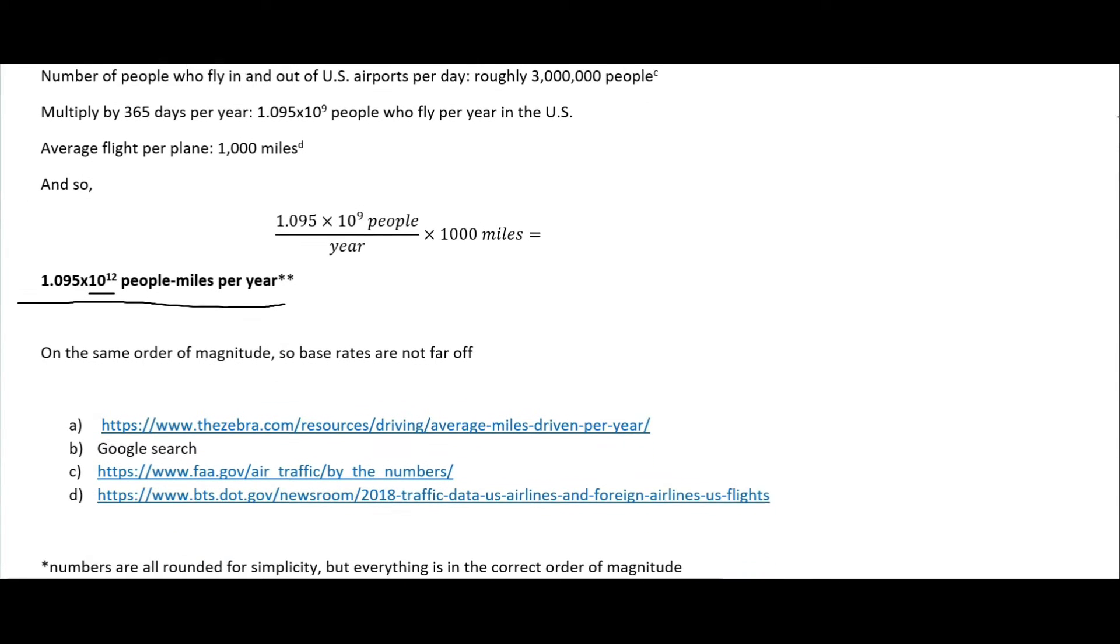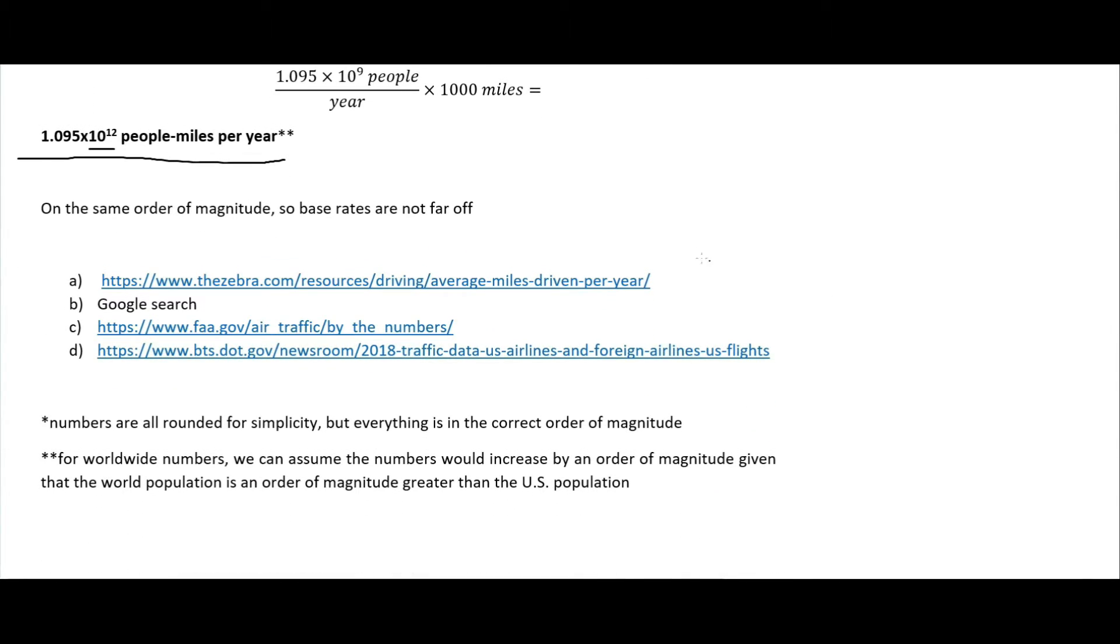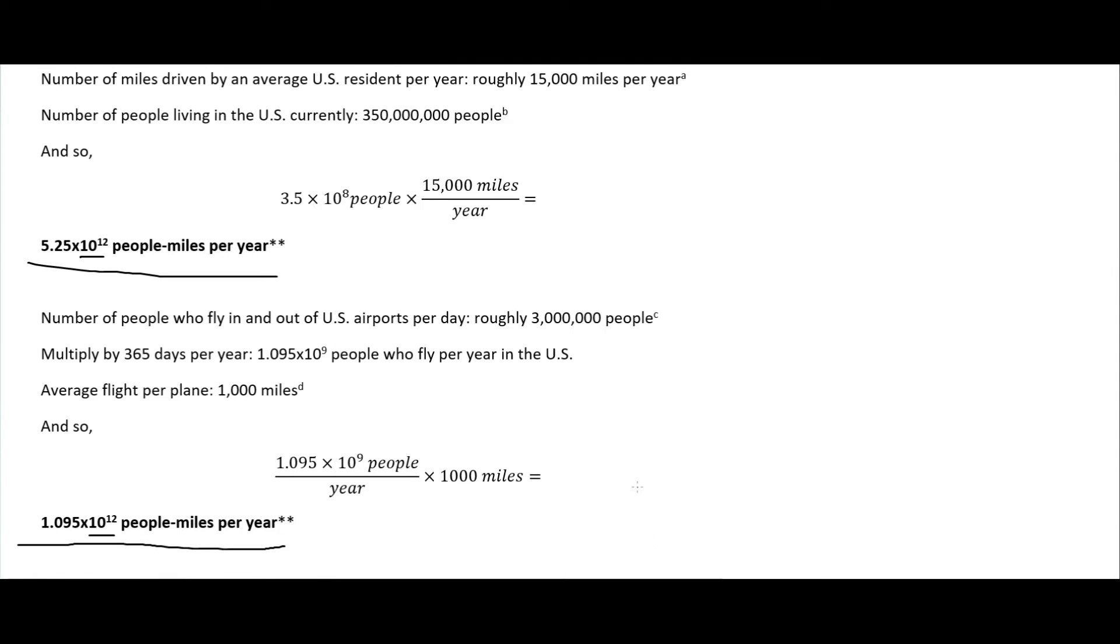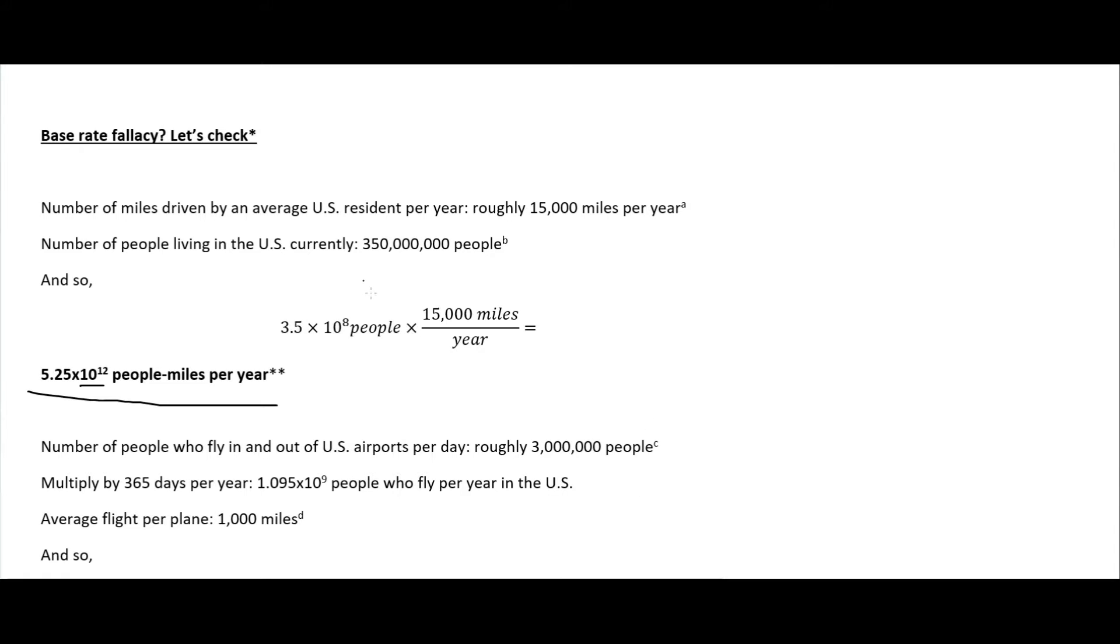These are my sources right here. Also, numbers were all rounded for simplicity. If we want worldwide numbers, we could assume that the numbers increase by an order of magnitude given that the world population is an order of magnitude greater than the U.S. population. The U.S. population is on the order of a hundred million.